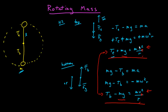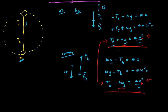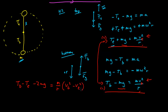So I want to find the difference between these two tensions: T sub B minus T sub T. If I subtract the two Newton's second law equations, I get: T sub B minus T sub T minus 2mg equals m/r times (v²_bottom minus v²_top). But I don't really know what the speeds are yet, so I don't have enough to solve for what I want. Is there more physics I can apply to this problem?